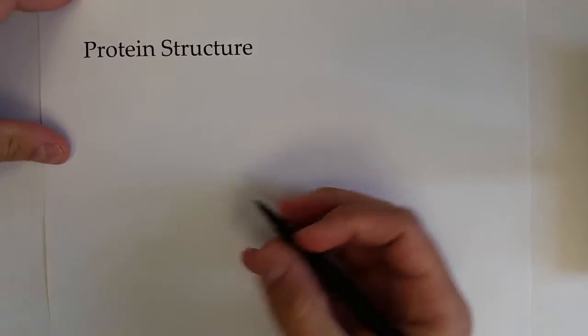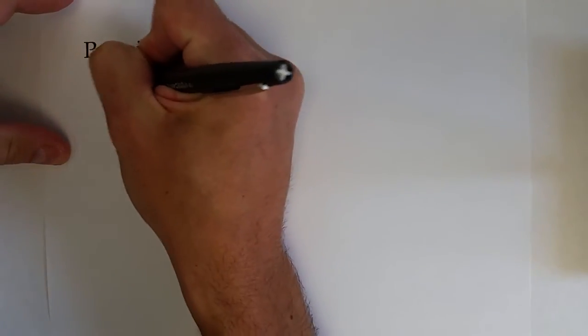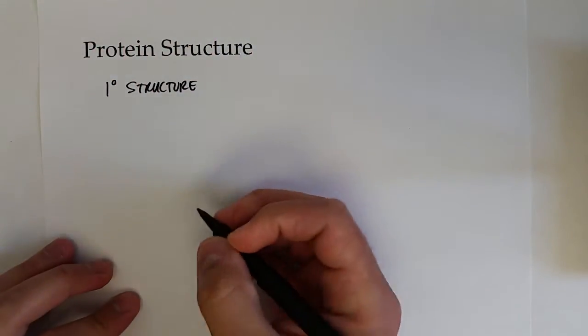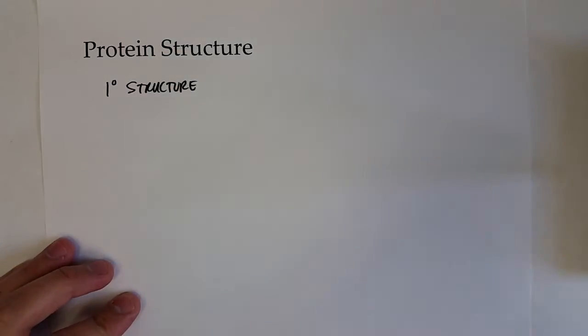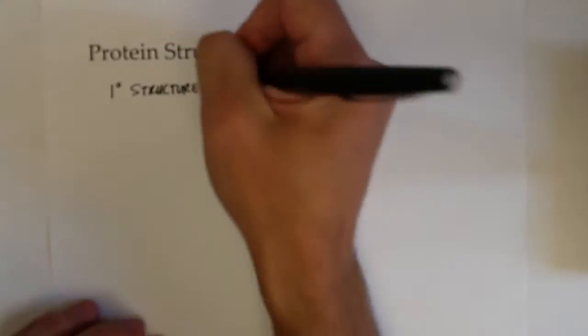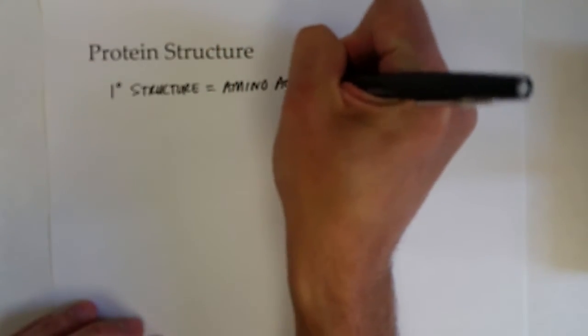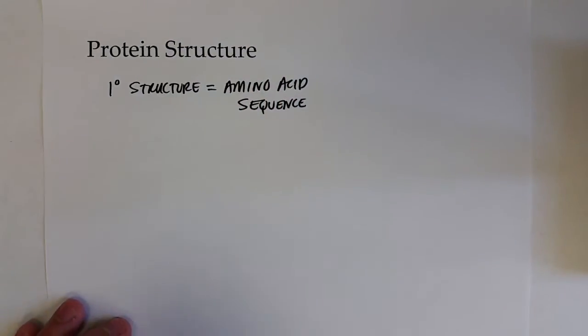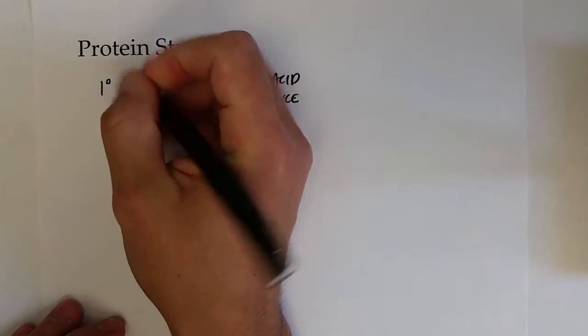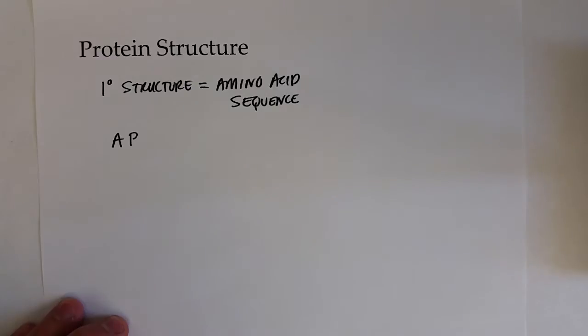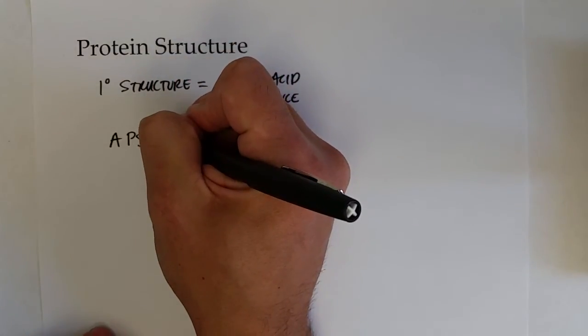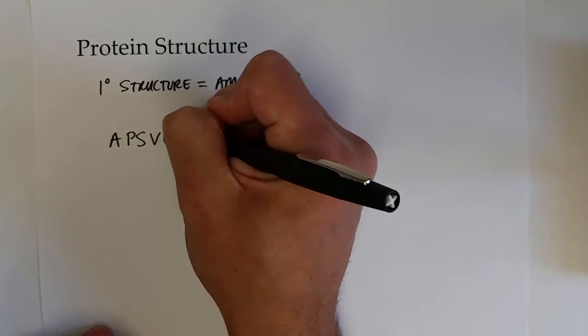Okay, so there are four stages or four different structures to proteins. The primary structure is the amino acid sequence. So if you just take a look at the amino acids that are linked up together, we can use the one letter abbreviation, so an alanine linked up with proline, then maybe a serine, valine, glutamine, isoleucine, and so on and so forth.